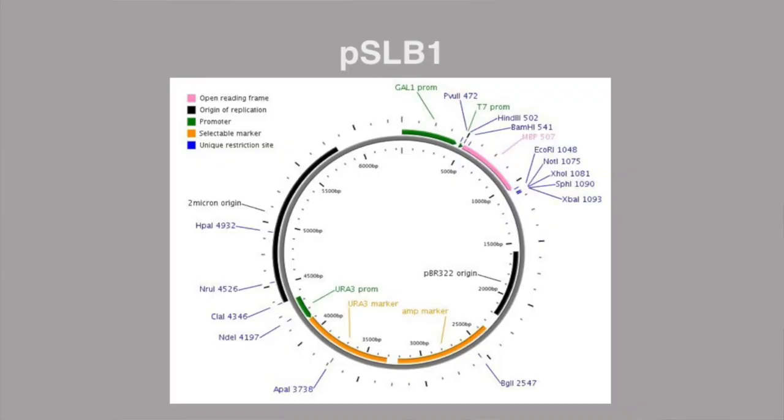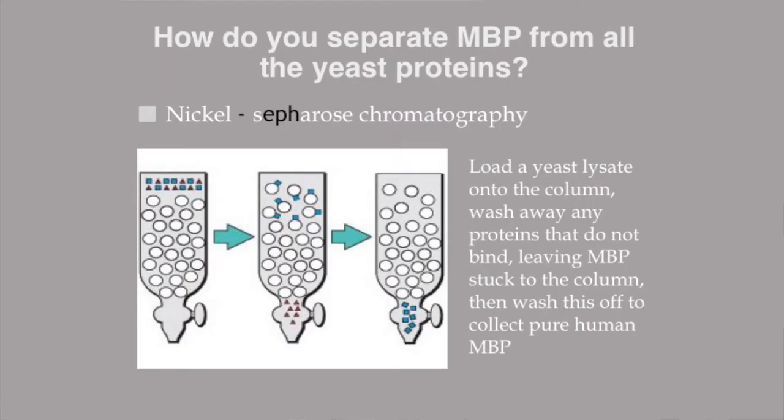This is our expression plasmid. The green is a gal promoter, which means we can express the gene in galactose. The pink strip at the top is our modified MBP. This is called a shuttle vector, meaning we can use it in both E. coli and yeast. The histidine amino acids are important because this is how we separate our MBP from our yeast proteins. We use nickel sepharose chromatography — we run our proteins through a column, and nickel binds with histidine, so our MBP sticks to the column and everything else is washed away, allowing us to separate and collect our MBP.